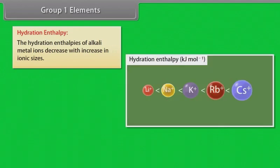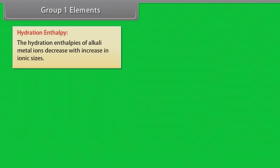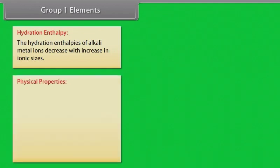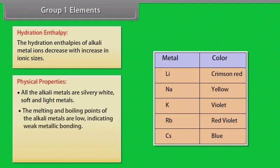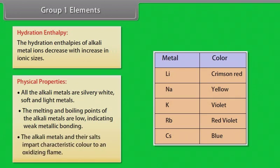The hydration enthalpies of alkali metal ions decrease with increase in ionic sizes. Physical properties: all the alkali metals are silvery white, soft and light metals. The melting and boiling points of the alkali metals are low, indicating weak metallic bonding. The alkali metals and their salts impart characteristic color to an oxidizing flame.